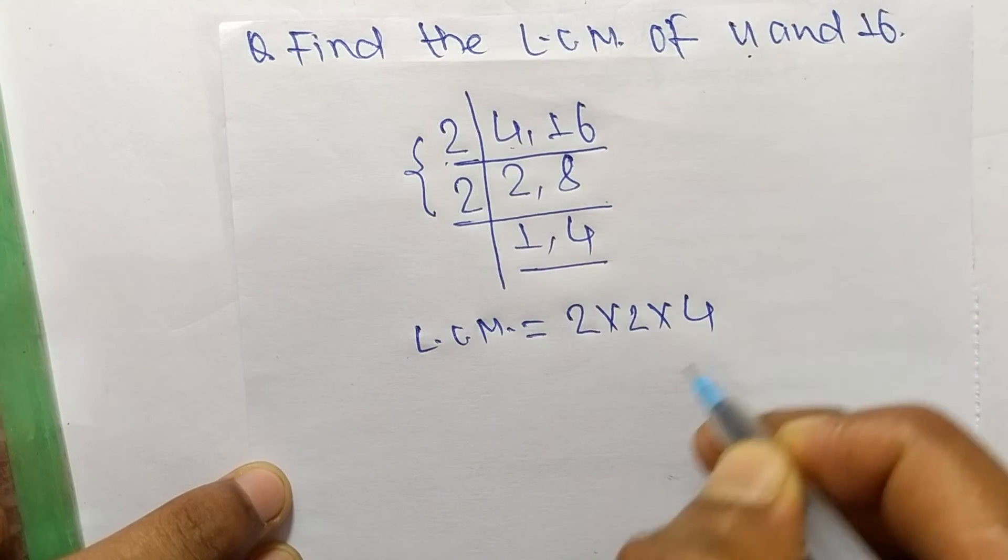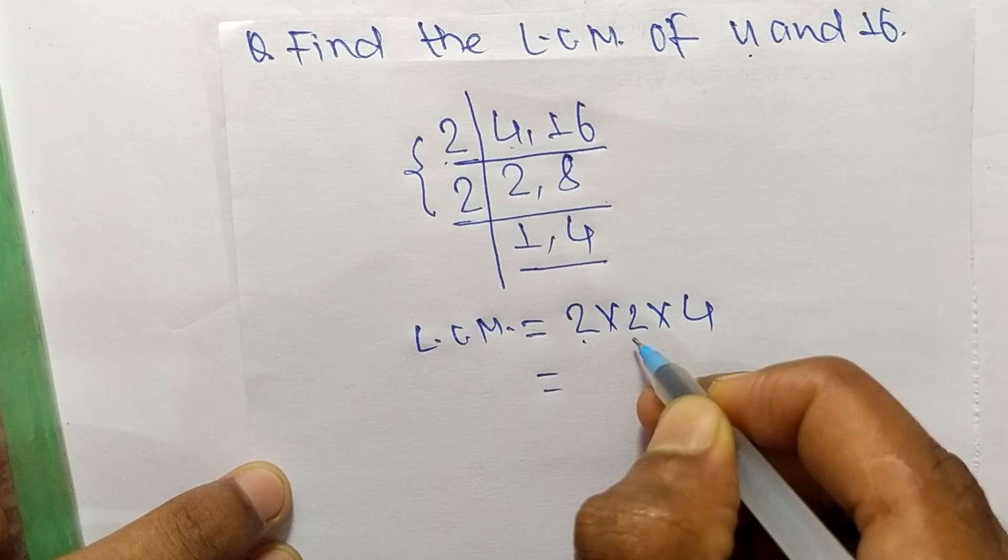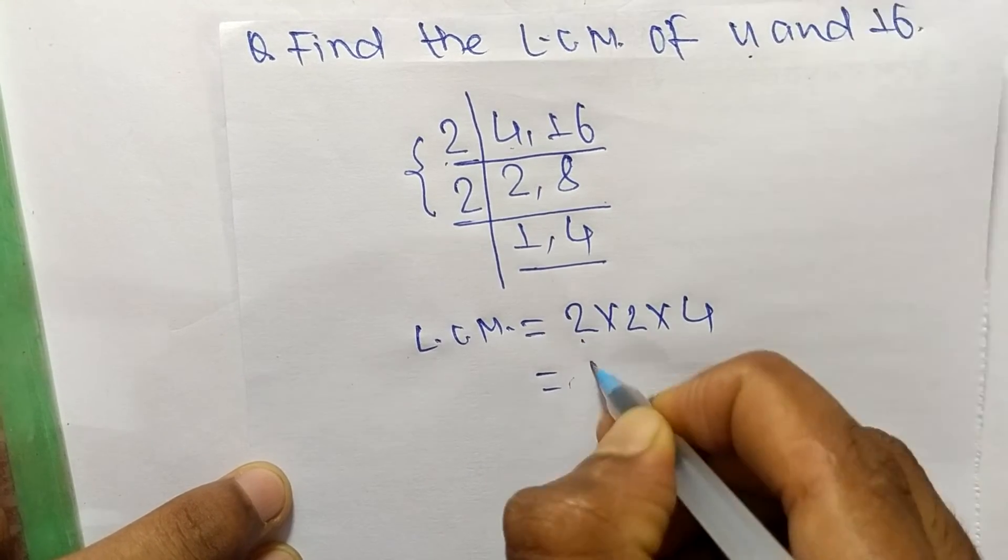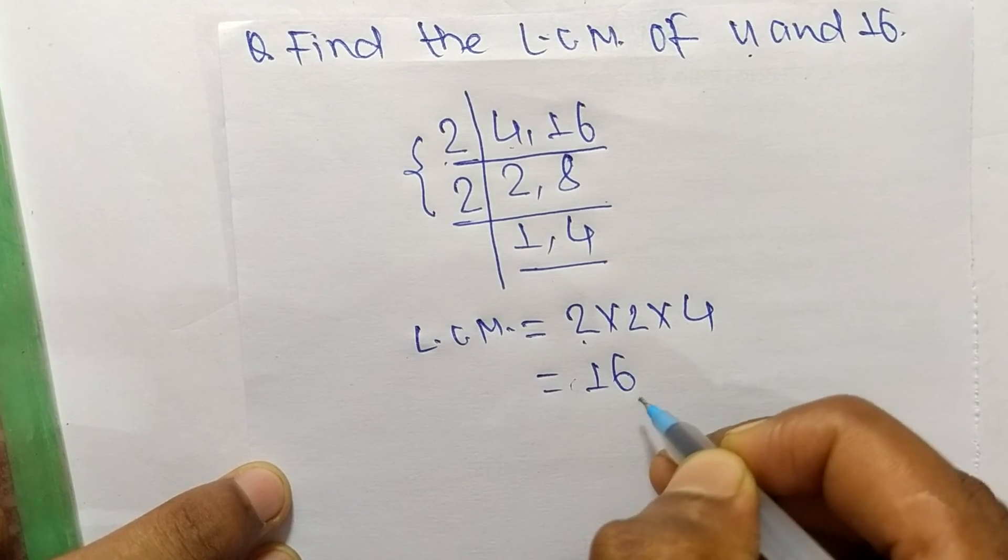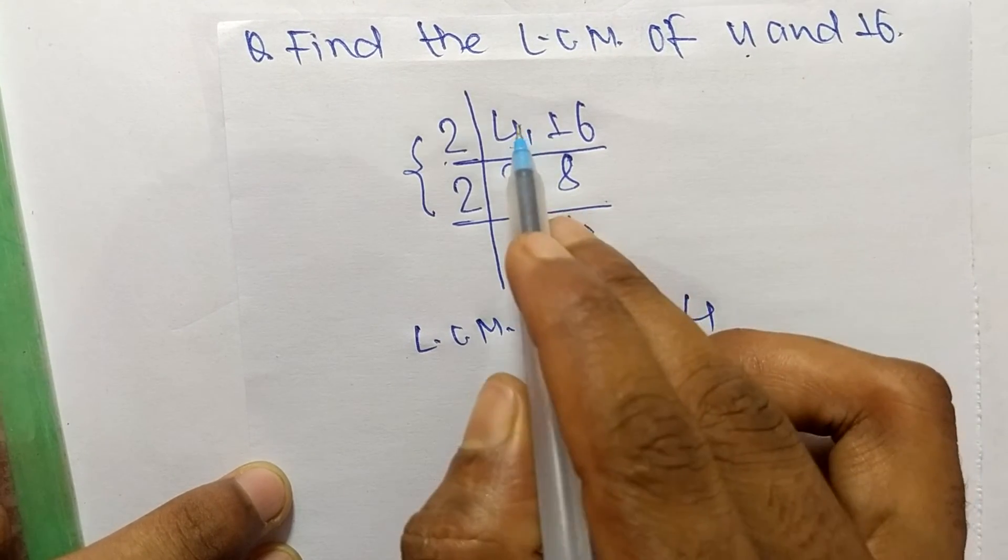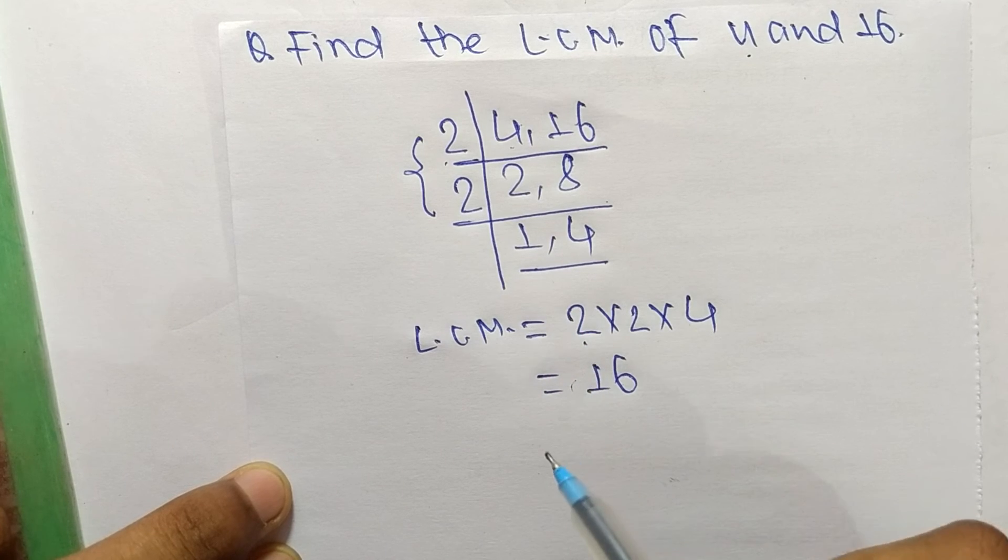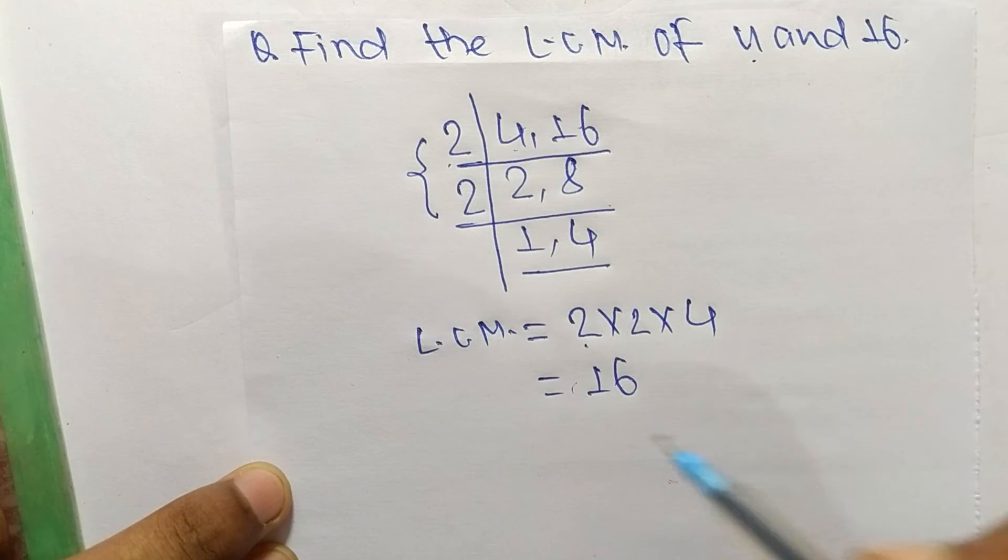So it is 2 times 2 equals 4, and 4 times 4 equals 16. Therefore, 16 is the LCM of 4 and 16. Thanks for watching.